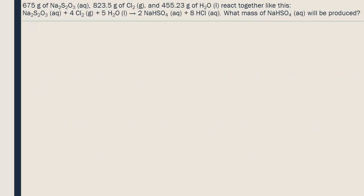To solve this question, we need to find the number of moles of NaHSO4 that each of the reactants would potentially be able to produce, and then compare these amounts to find the limiting reagent. Then we can calculate the number of grams produced.